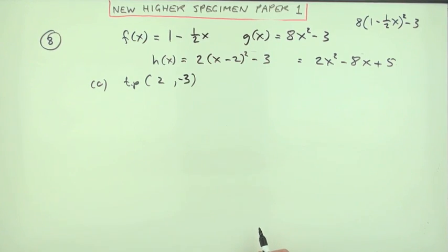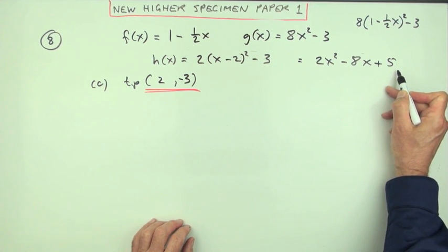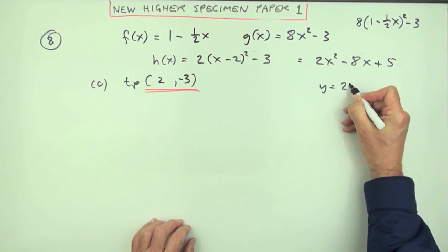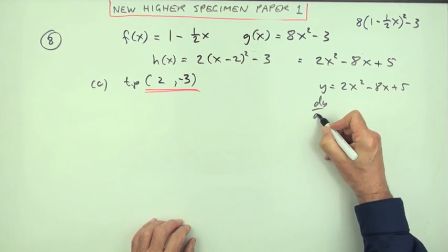Now you could get it by differentiating this—just be a wee bitty longer, wouldn't it? You could say, well, if y equals 2x² - 8x + 5, then dy/dx would be 4x - 8.